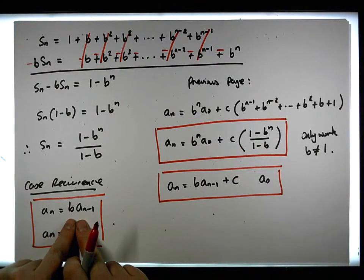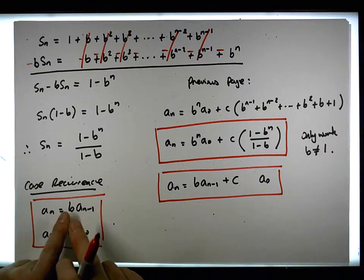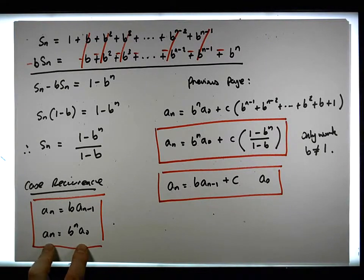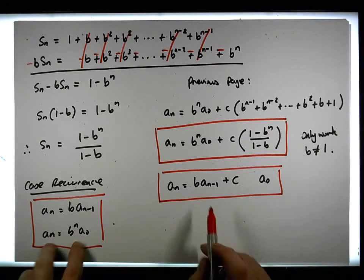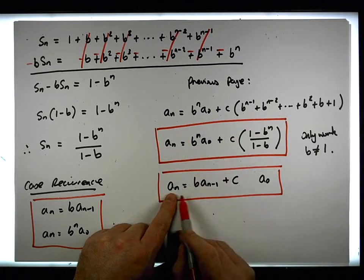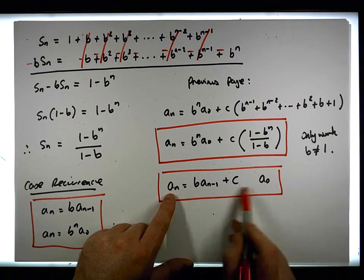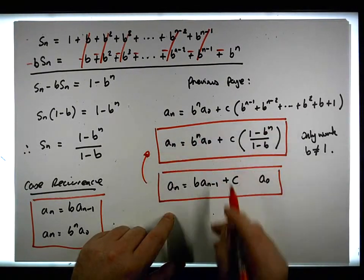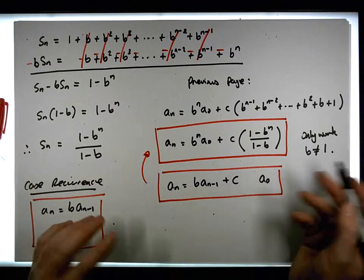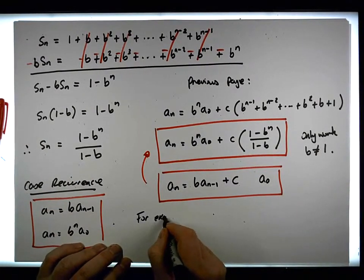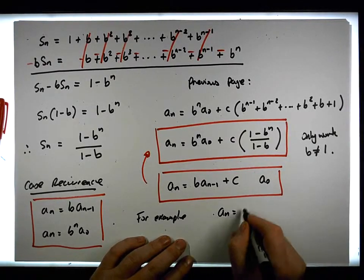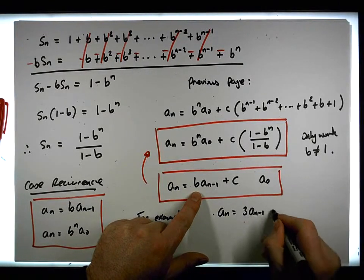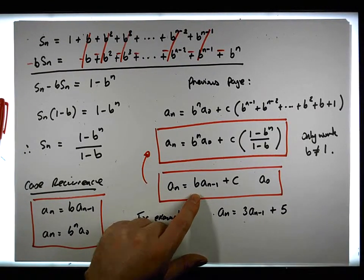This linear homogeneous recurrence has the closed form a_n equals b to the n times a zero. The heterogeneous case is what we've solved here — this linear heterogeneous recurrence has the general form we derived. For example, if we have the recurrence a_n equal to three times a_{n minus one} plus five...